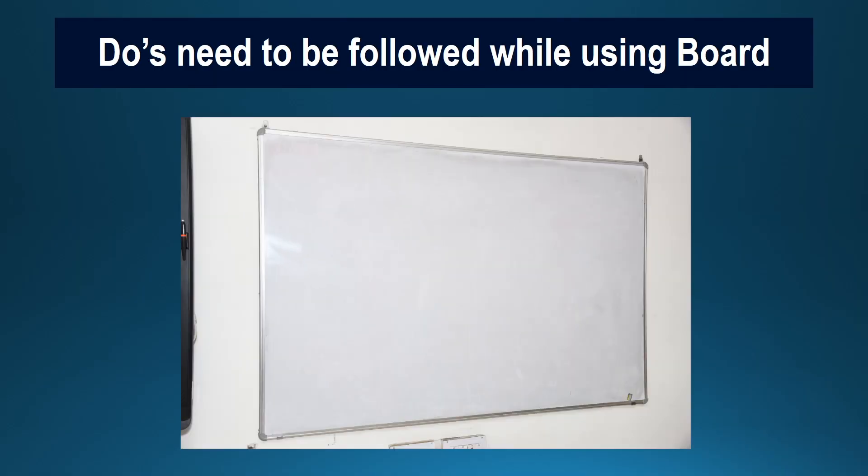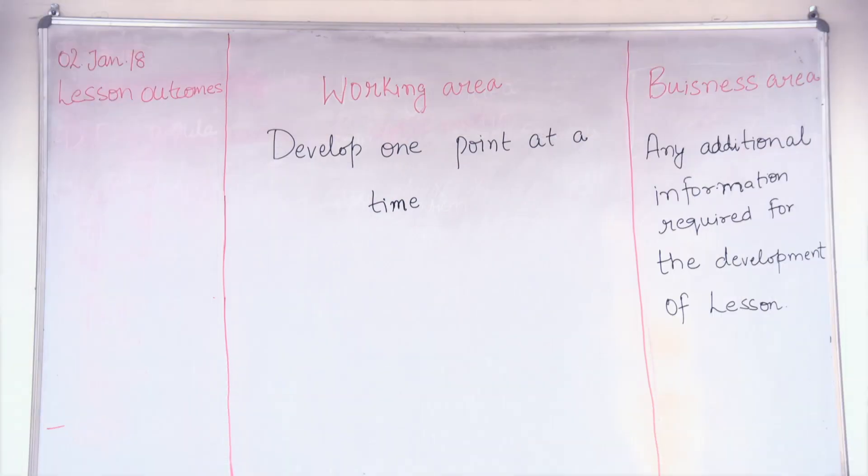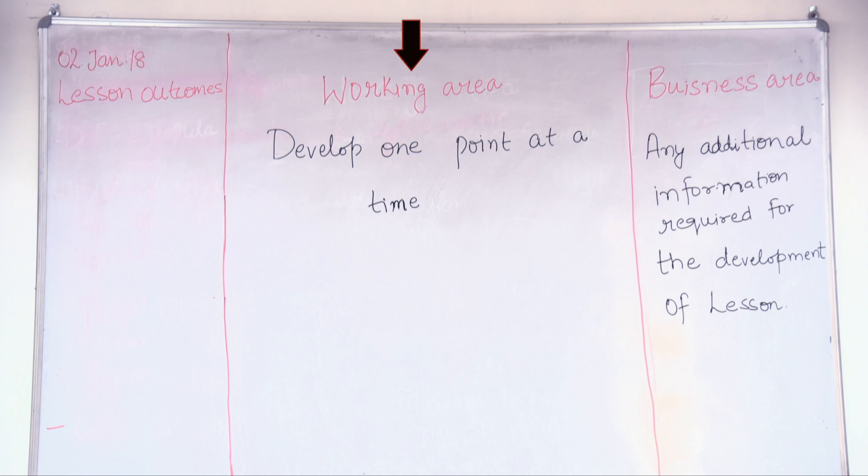The board must be placed on a flat surface and that surface needs to be well lighted. When the teacher is using the board, the organization of board space is a must. The board needs to be divided into three different columns. The left column is where lesson outcomes need to be enlisted by the teacher. The central column is known as the working area or developmental area, where the teacher develops and presents content to the students.